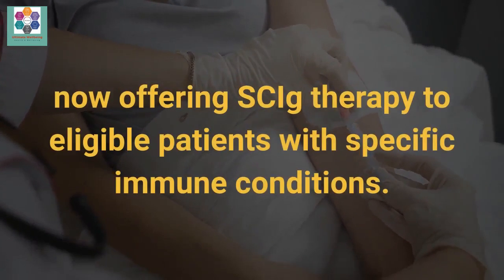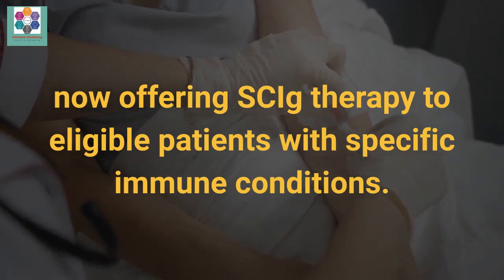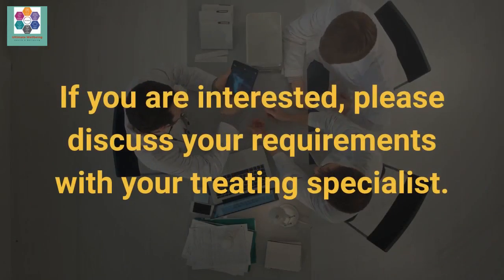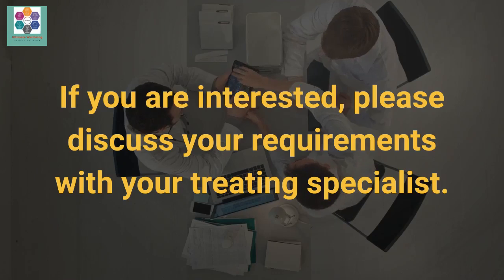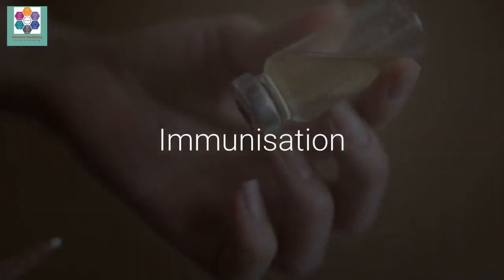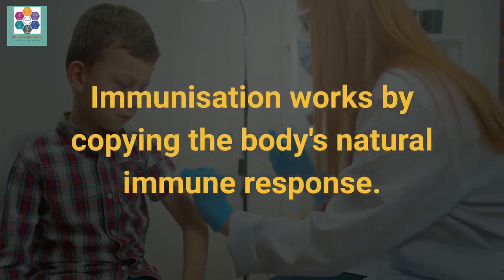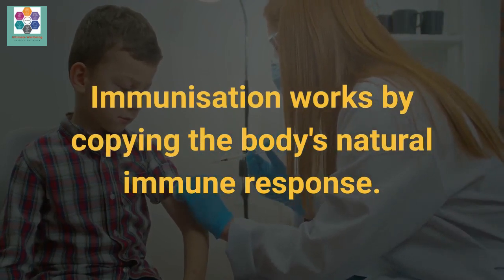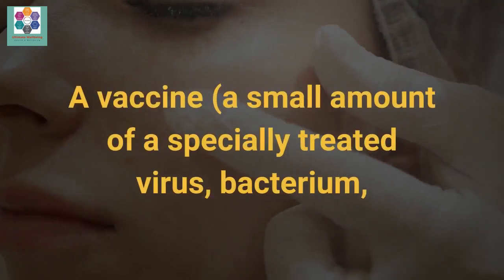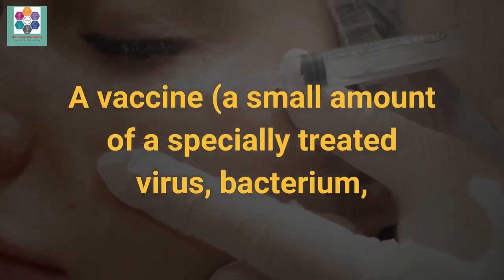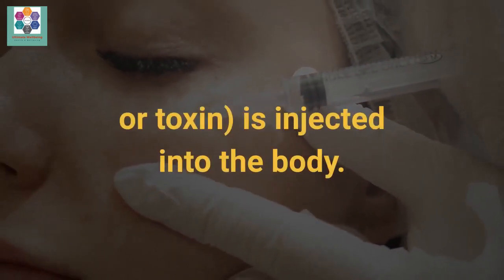Subcutaneous immunoglobulin is like intravenous immunoglobulin. It is made from plasma, the liquid part of blood containing important proteins like antibodies. Many health services are now offering SCIg therapy to eligible patients with specific immune conditions. If you are interested, please discuss your requirements with your treating specialist.